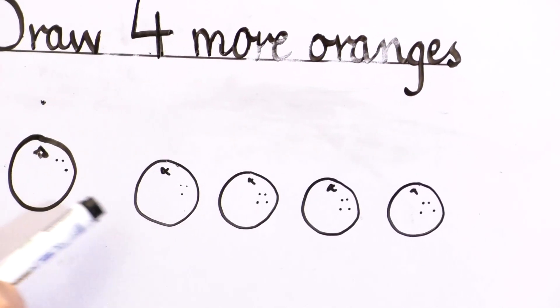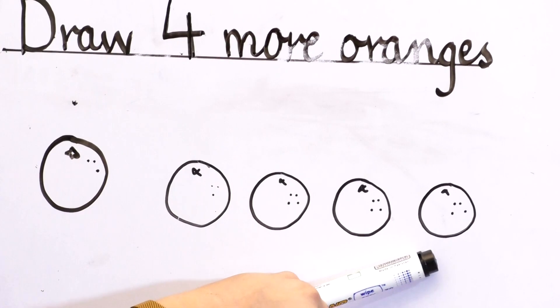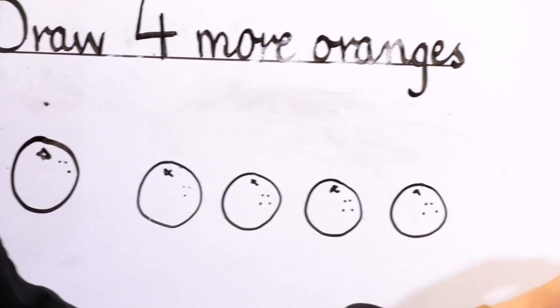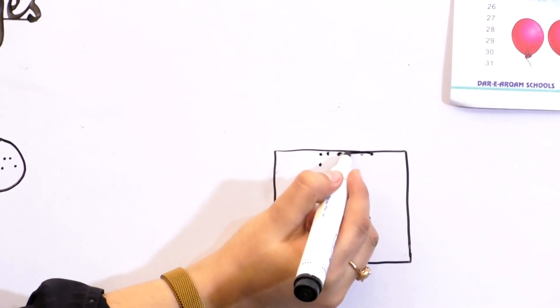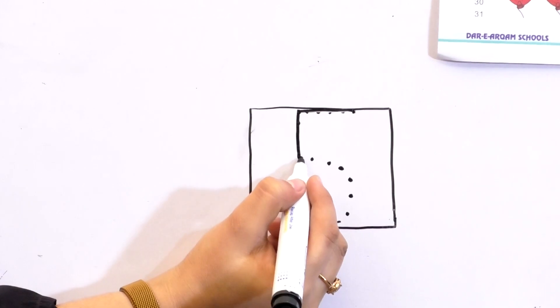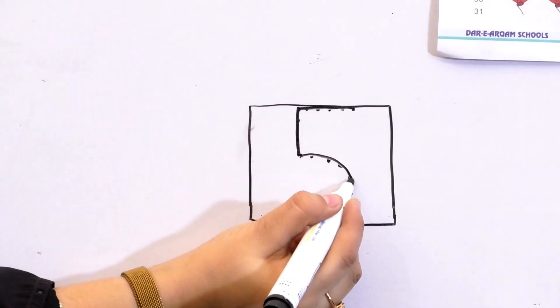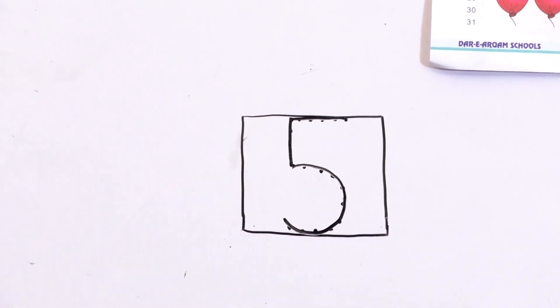Let's count: one, two, three, four, five. Let's try it in the box. Make a sleeping line, then standing line, and then curve till the bottom. It's number five.